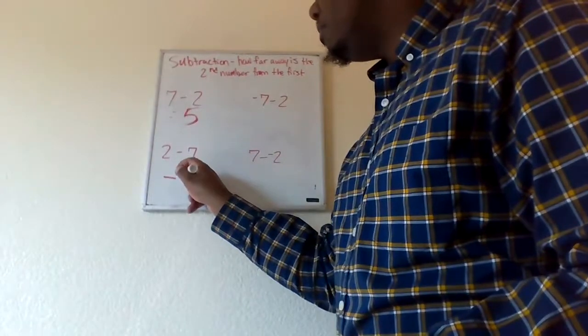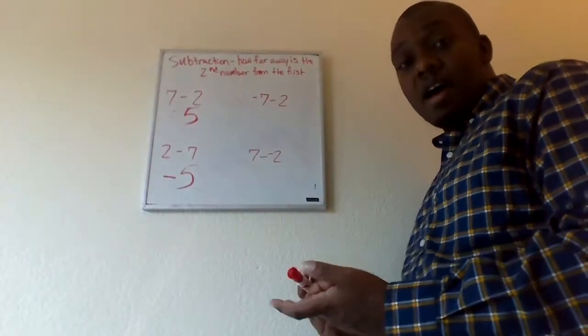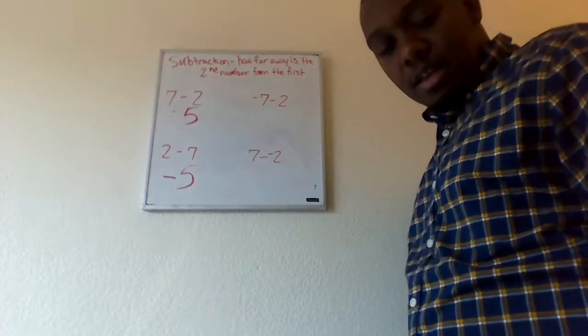So, two minus seven would, of course, be negative five. Okay. That's not too bad, right?